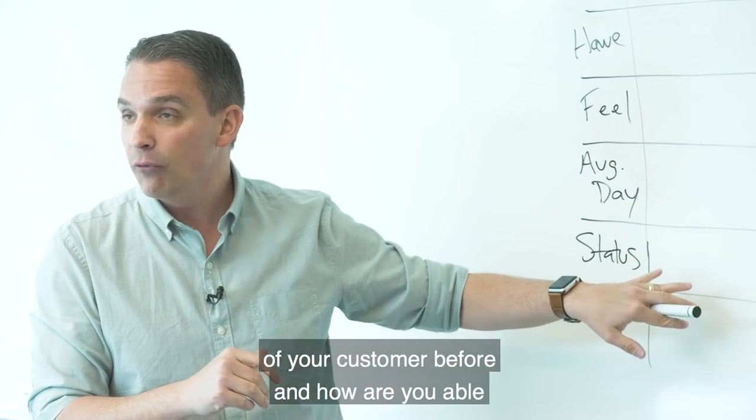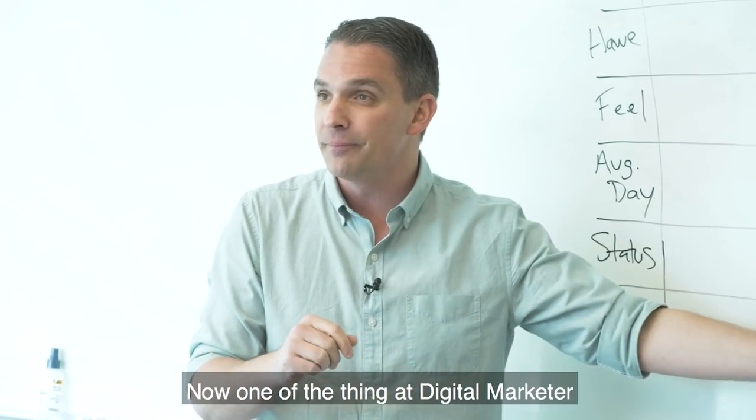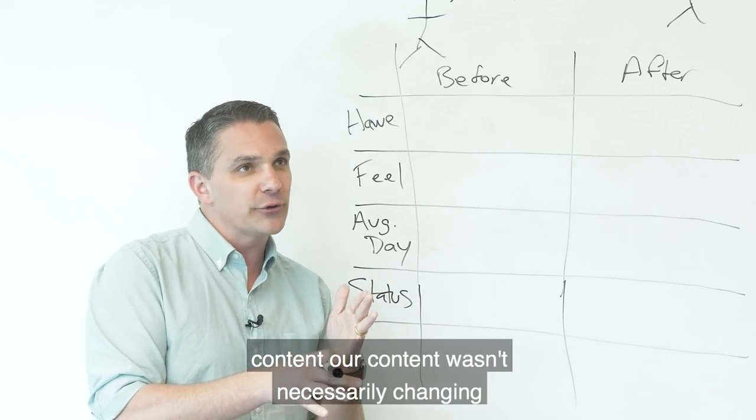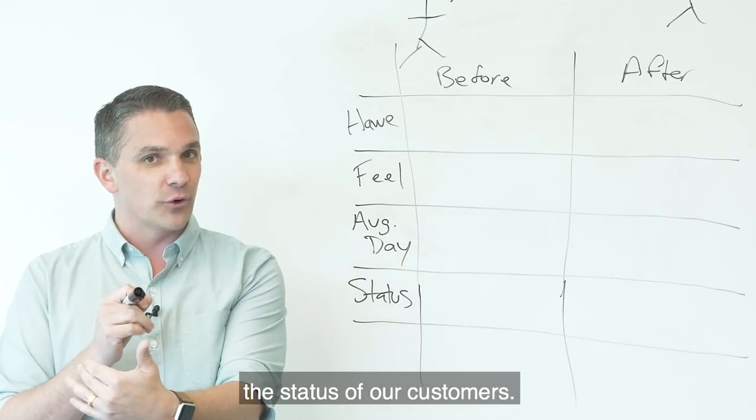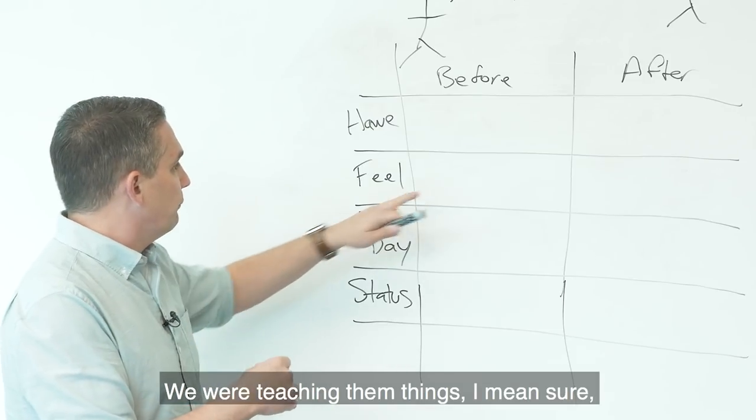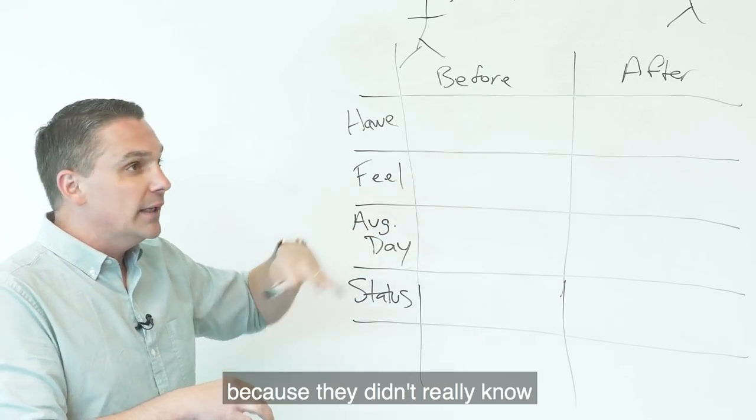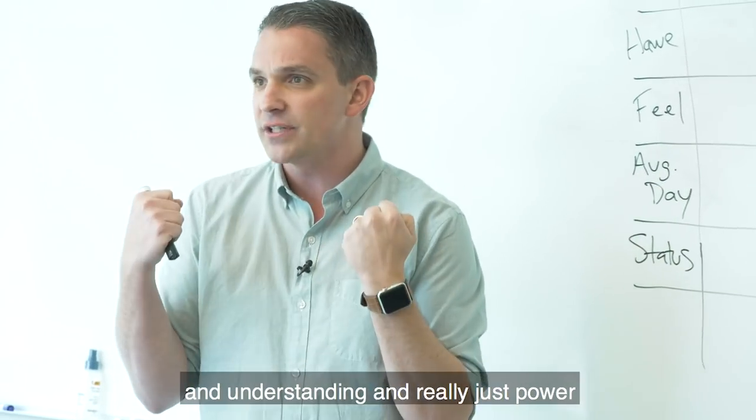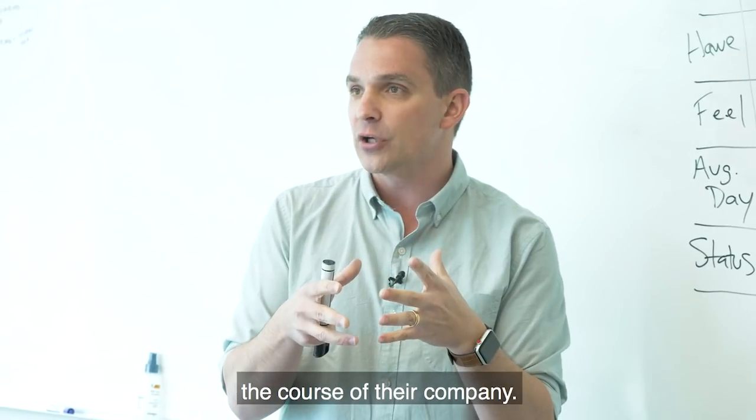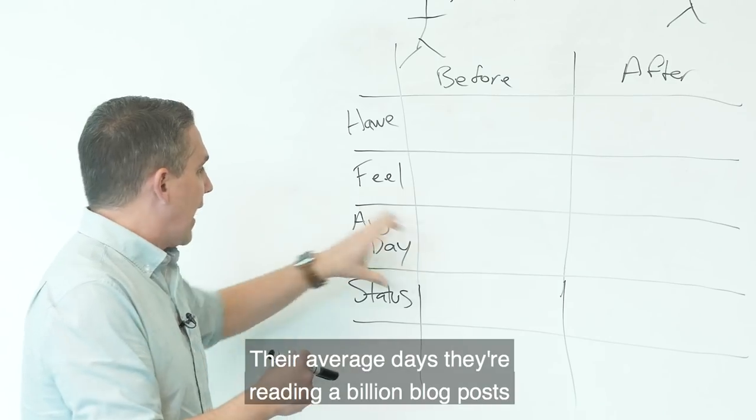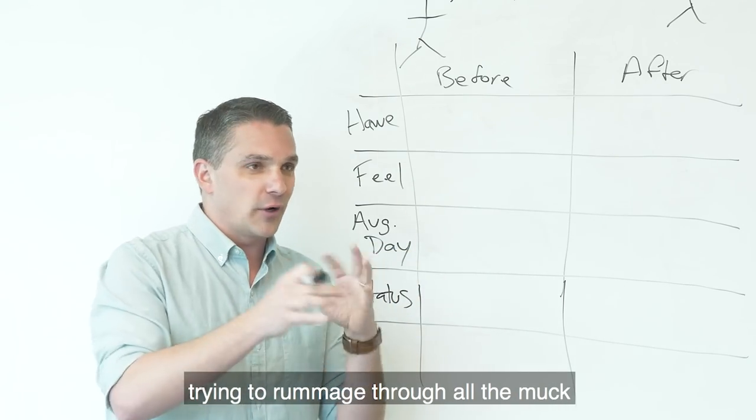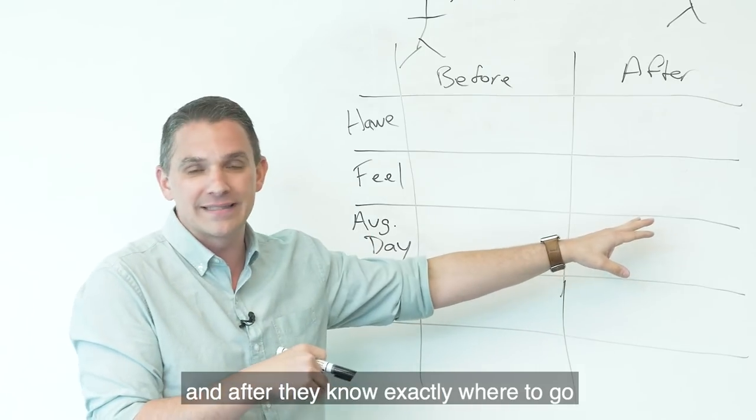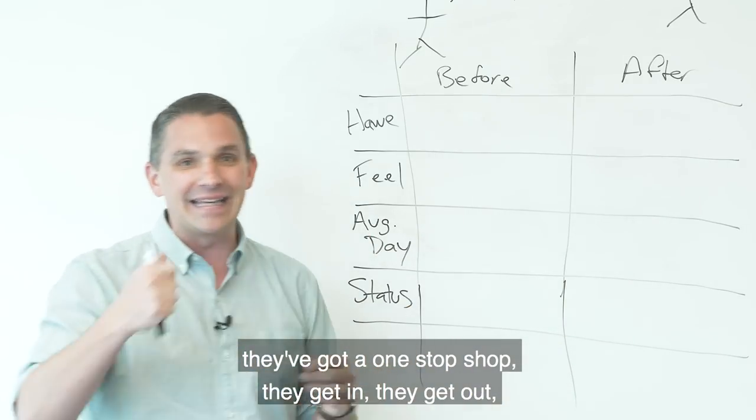So ask yourself, what is the status of your customer before and how are you able to change their status after? One of the things at Digital Marketer that we realized is while we had really great content, our content wasn't necessarily changing the status of our customers. We were teaching them things. Before they were frustrated and they felt lost because they didn't really know what they should do first or how to do it. And we gave them community. And so afterwards they had this sense of confidence and understanding and really just power over the fact that they could influence the course of their company. Their average day is they're reading a billion blog posts, trying to rummage through all the muck that is the content ecosystem in the marketing space. And after they know exactly where to go, they've got a one-stop shop. They get in, they get out, they get the job done, they go home. But status we weren't really touching.